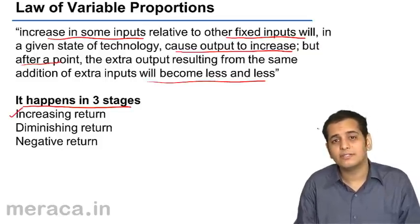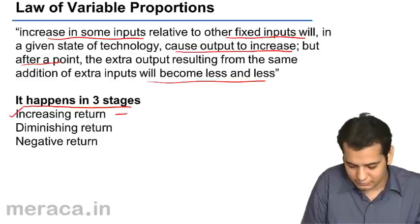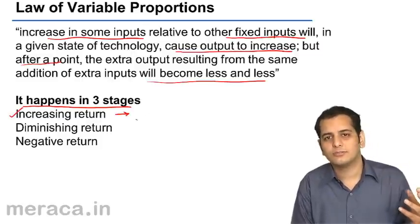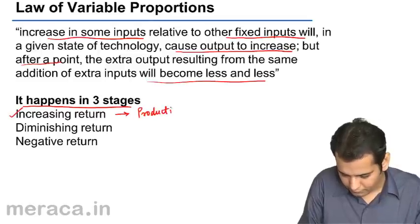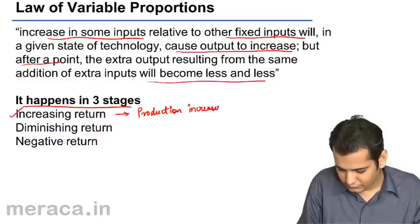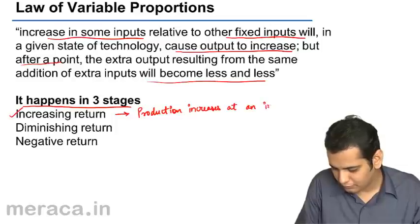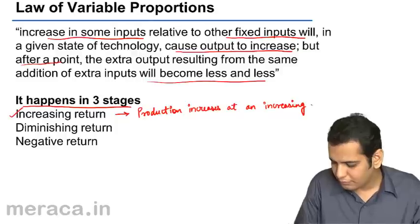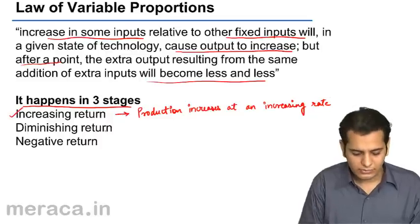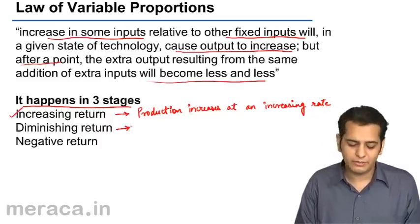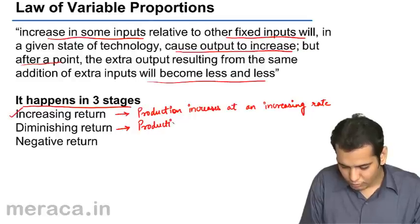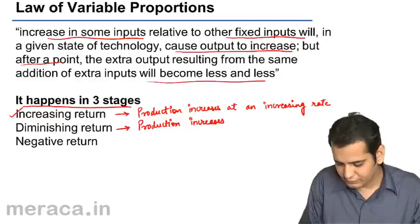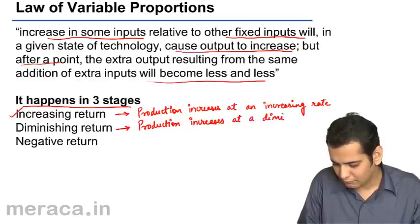The first stage is the stage of increasing returns, where the production increases at an increasing rate. The second stage is the stage of diminishing returns, where production increases at a diminishing rate.